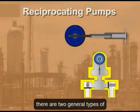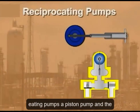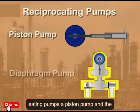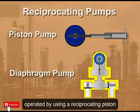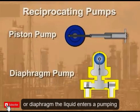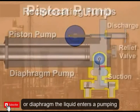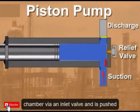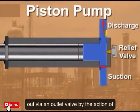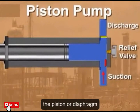There are two general types of reciprocating pumps: the piston pump and the diaphragm pump. These types of pumps are operated by using a reciprocating piston or diaphragm. The liquid enters a pumping chamber via an inlet valve and is pushed out via an outlet valve by the action of the piston or diaphragm.